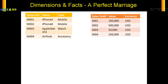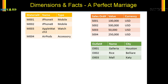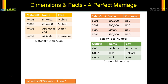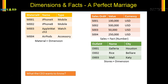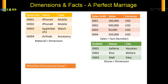Then your company sells them, so these are your transaction data or these are the facts. You also want to know which mall or outlet and from which city you are having the maximum sales. So those locations are also dimensions because they are master data. For example, O001 Galleria Houston is master data, but sales 001 — 100,000 USD — that is your transaction data, or that is a fact.